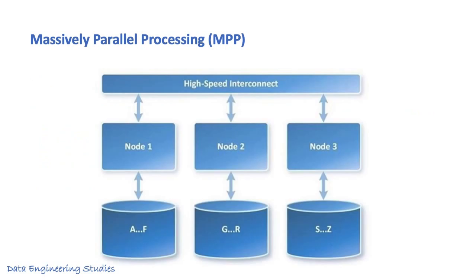In this MPP architecture diagram, there are three nodes and each node has its own disk storage and operating system. Node 1 is independent of node 2. Since all the nodes are loosely coupled, it is very easy to add nodes or remove nodes depending on the load.